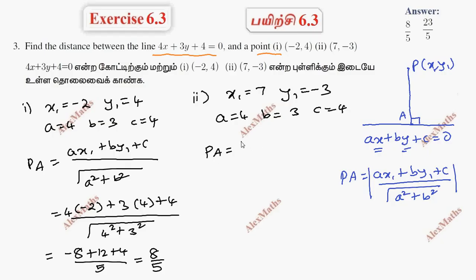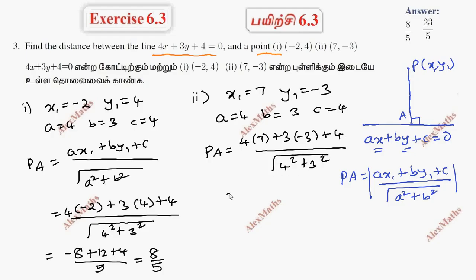Distance equals a·x₁ plus b·y₁ plus c, whole divided by root of a² plus b². Numerator: 28 minus 9 plus 4 equals 23. Denominator: 5. So the distance is 23 by 5 units.